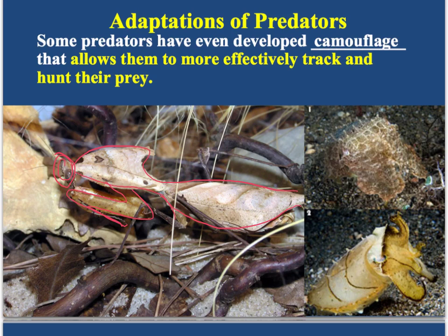Here's another example of an animal that uses camouflage — this is an octopus. Here's the front of his head, his eyes, and his body. He's buried himself in the sand and changed his skin color to look like the sand. He's sitting right there waiting for a shrimp, lobster, or crab to crawl by and then jumps out and grabs it. Camouflage allows predators to be more effective hunters because they can hide and wait for prey to get closer, then grab it.